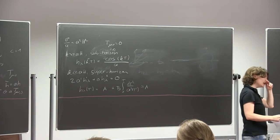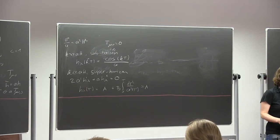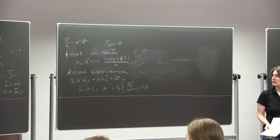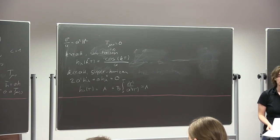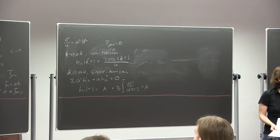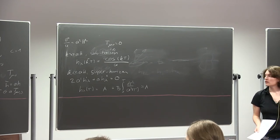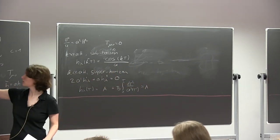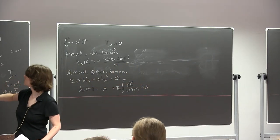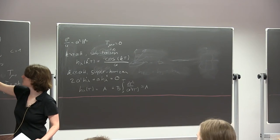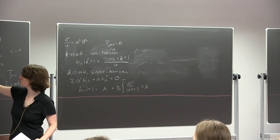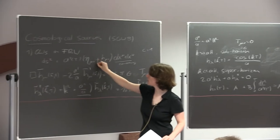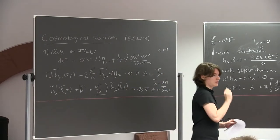A student asks about the metric convention — whether it's A² g_μν or with a fluctuation. The clarification is that the sign difference between plus and minus comes from whether you're looking at the metric or the inverse metric: in the actual metric it should be plus, in the inverse metric it should be minus.